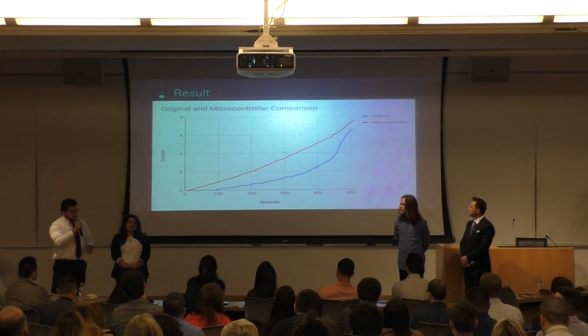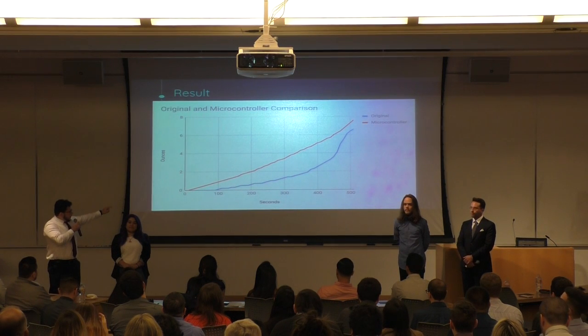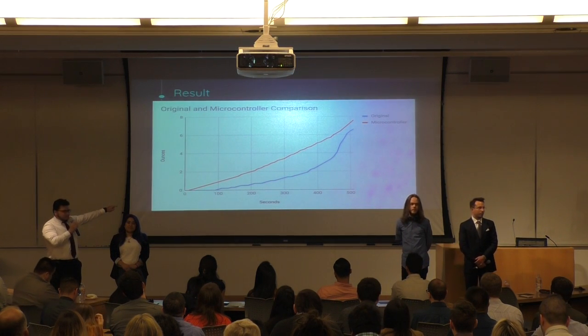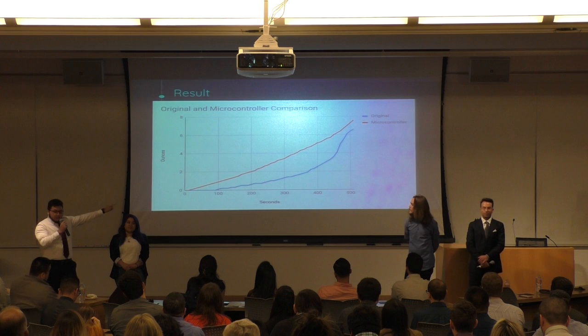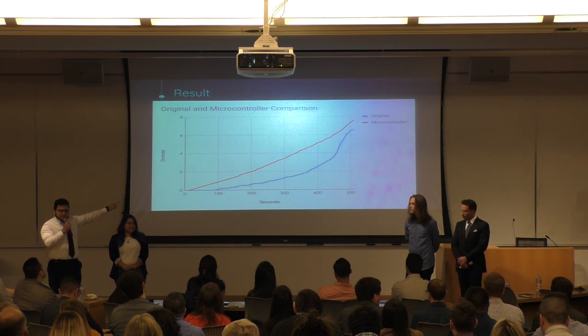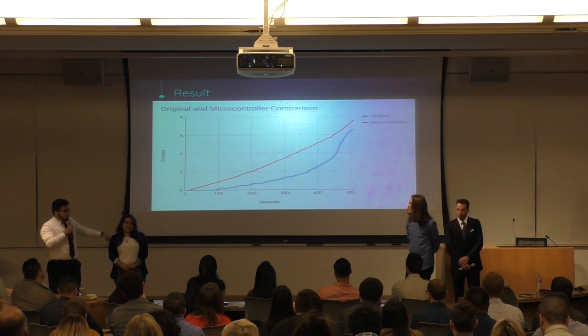From the results, the blue line represents the original dispersal, which has a more exponential curve. With our solution, we were able to make it significantly more linear, which is what we were going for.